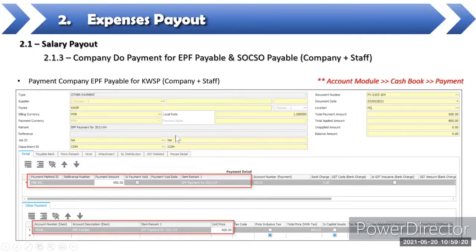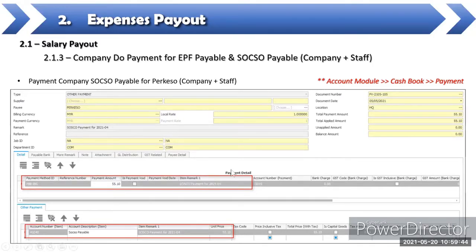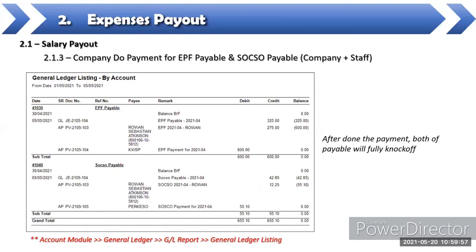The company then does a payment voucher to pay RM600 to KWSP, debiting the EPF payable account to knock it off. Similarly, the SOCSO total of RM55.10 (company RM42.85 + employee RM12.25) is paid via another payment voucher. After payment, both payable accounts will have zero balance — the credit and debit entries fully knock each other off.